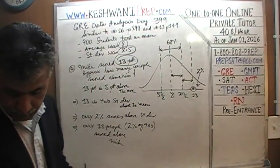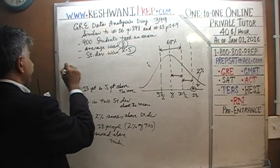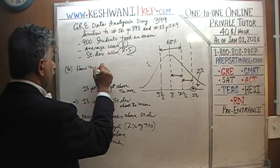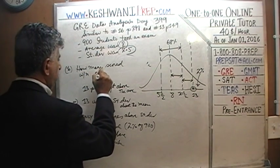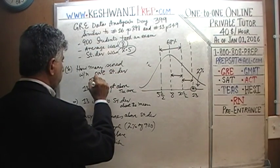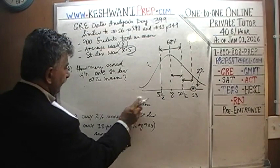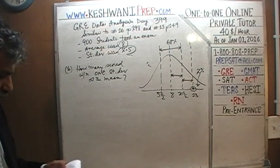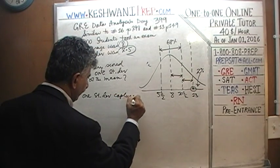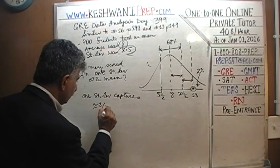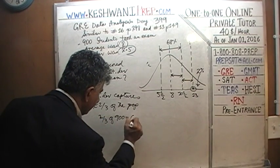In the next problem we're asked: how many people scored within one standard deviation of the mean? We know that one standard deviation captures approximately two-thirds of the population.